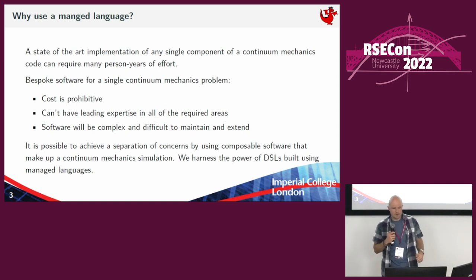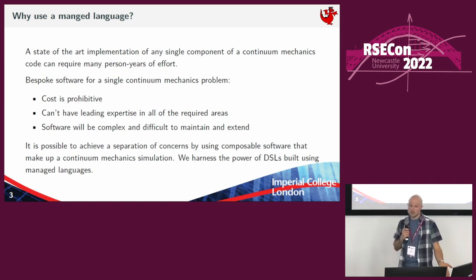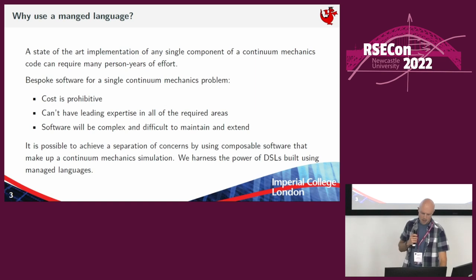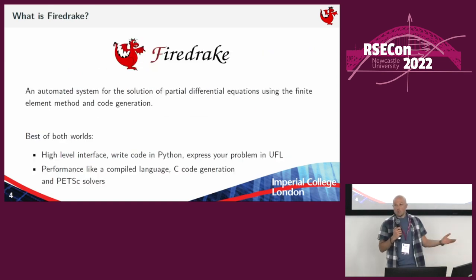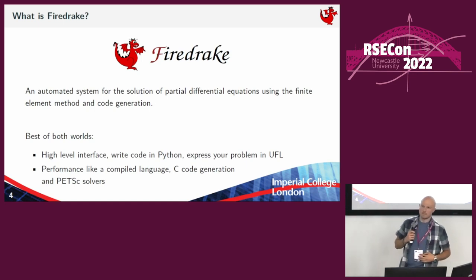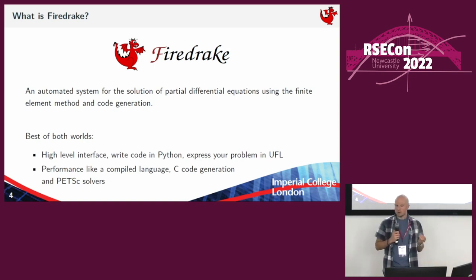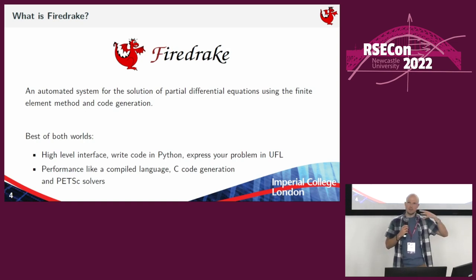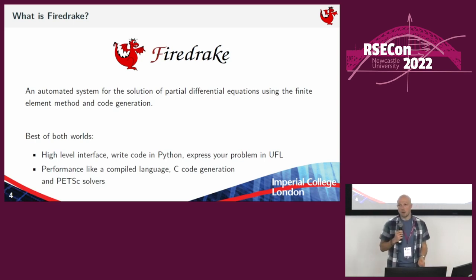We take the view that we can manage this through a separation of concerns. We compose together different software components and harness things like the power of DSLs, which are in managed languages. So what is FireDrake? FireDrake is the piece of code that I develop for — it's an automated system for the solution of partial differential equations using the finite element method and code generation. This allows us to have the best of both worlds: a high-level interface in Python where you can write and express your problem, and code generation that gives performance like a compiled language like C, and access to solver libraries like PETSc.